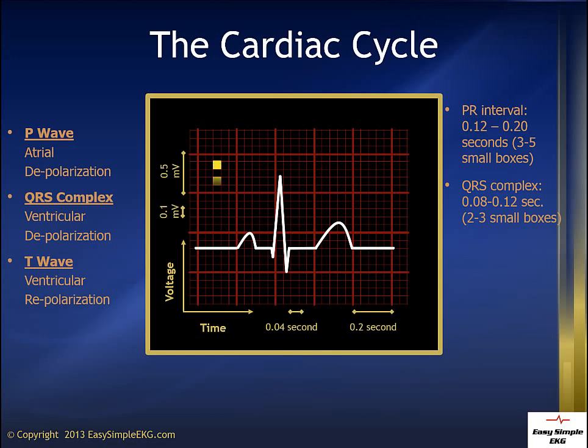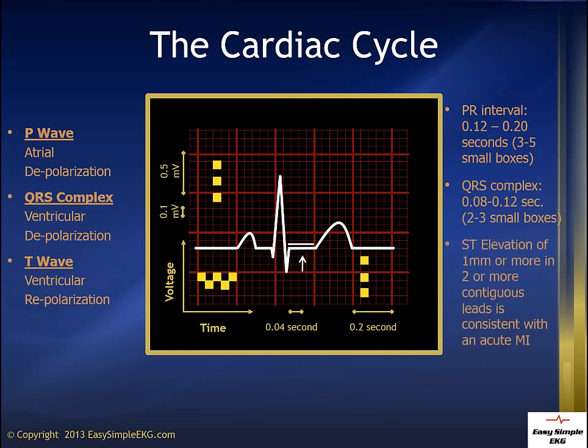On the EKG paper grid, there are boxes. Each small box is 1 millimeter square. ST elevation of 1 millimeter or more in 2 or more contiguous leads is considered to be consistent with an acute MI.